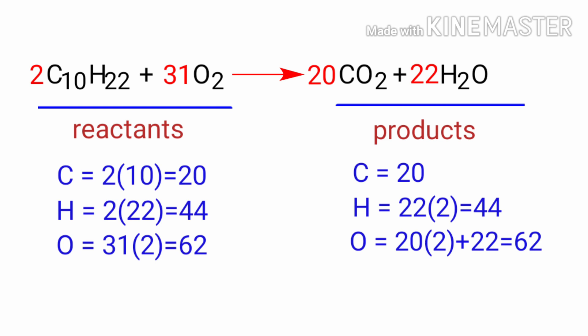The equation is now balanced. There are 20 Carbon atoms, 44 Hydrogen atoms and 62 Oxygen atoms on both sides.